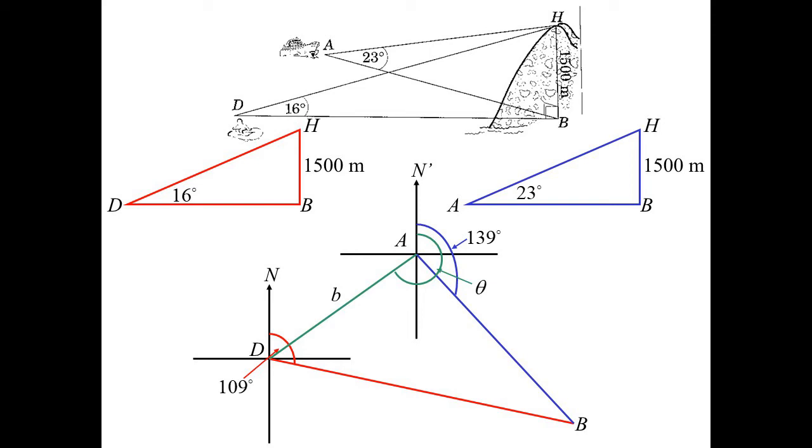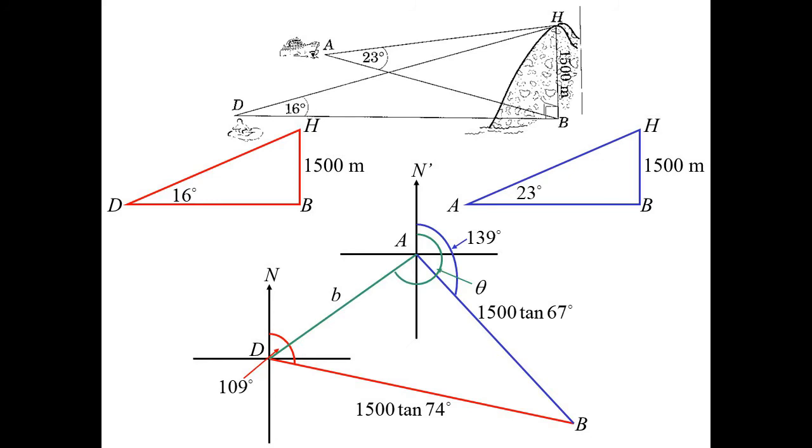OK. Let's do some work. Well, let's play around with those right-angled triangles. B, D, that's going to be 1,500 tan 74. And A, B, in the same way I could work out, is 1,500 tan 67. So we can put that on our diagram.